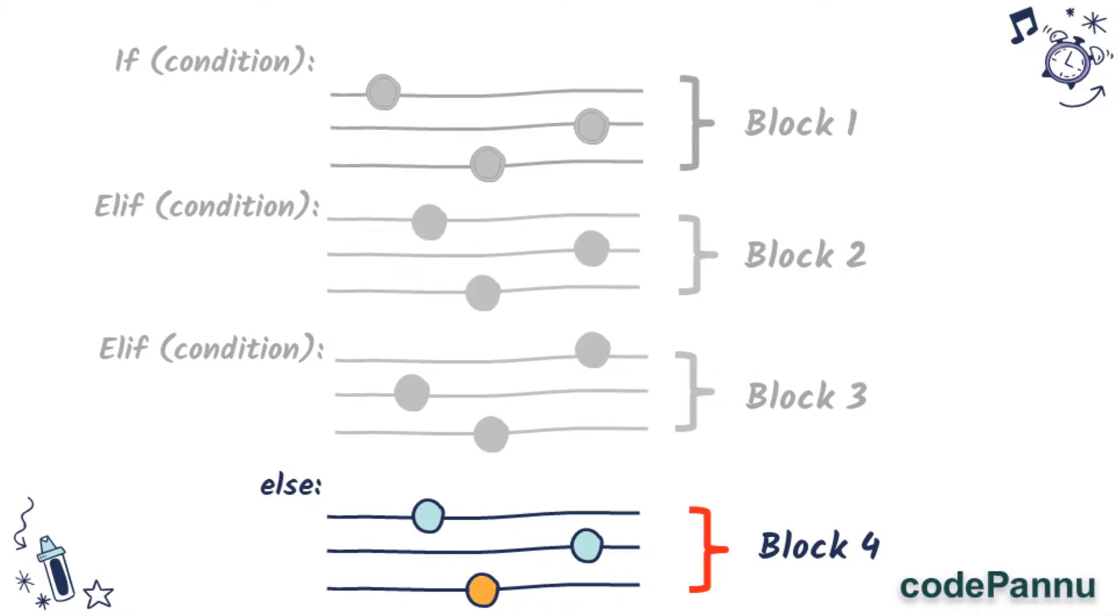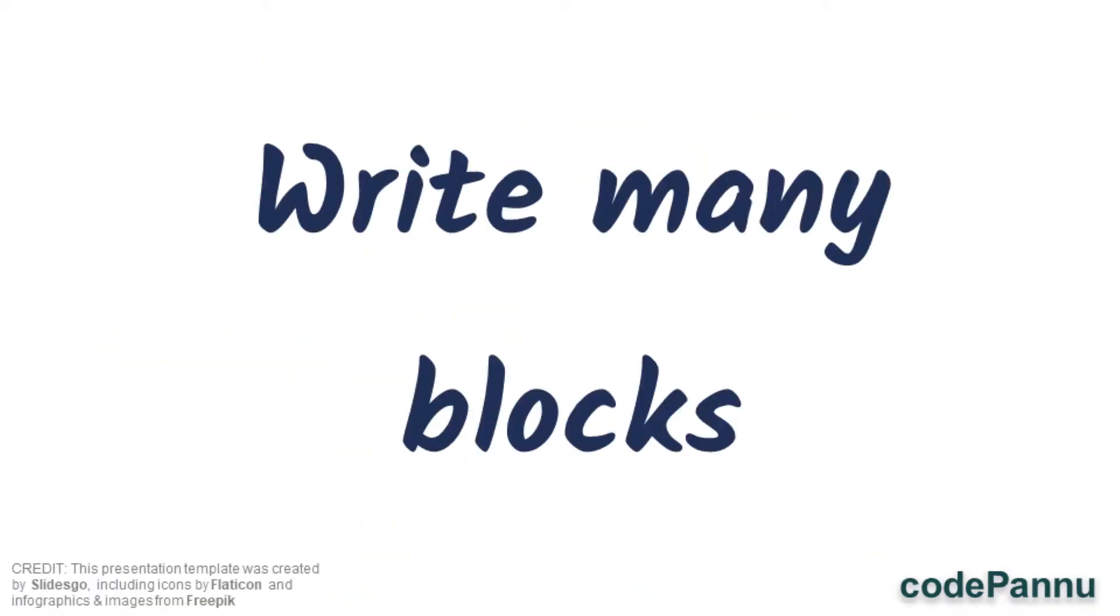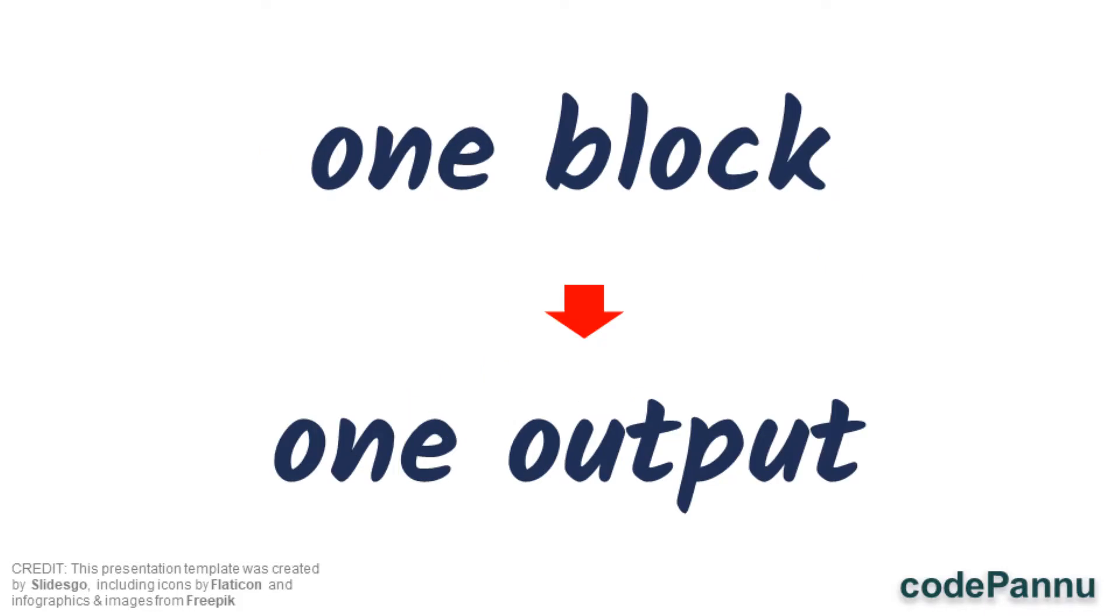If that condition is also false, then it will go to the else and run the last block. So when there are more elifs, Python will keep moving from one elif to the next one if the above one is false. And if all the elifs are false, then it will run the else block.